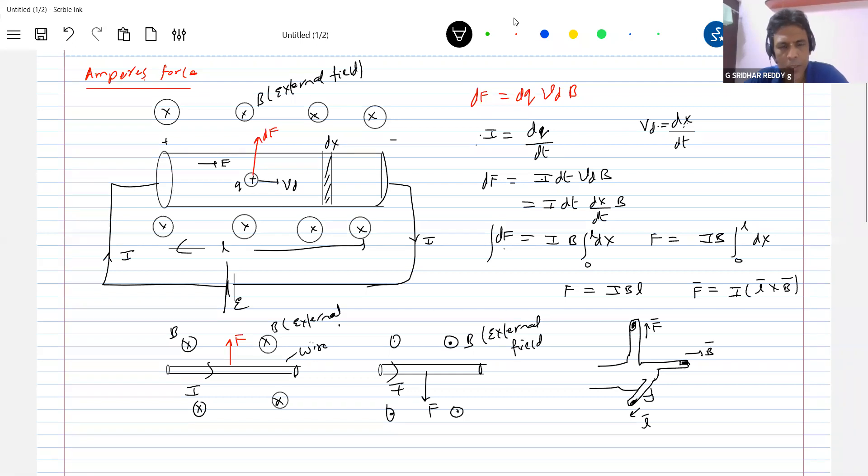So what is the conclusion now? If a current-carrying conductor kept in an external field of magnetic field strength B, then it's going to experience a force and that is given by F equal to I·L bar cross B bar. So if you write the magnitude, it will be I·L·B·sin(θ). Or effective, or what is theta? Angle between L bar and B bar.